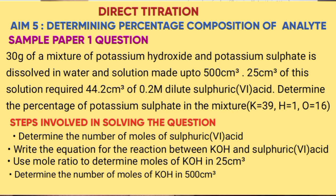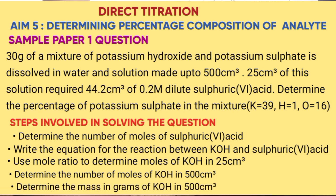Step 5 — determine the mass in grams of potassium hydroxide in 500 cm³, using mass equals number of moles times molar mass. Step 6 — determine the mass of potassium sulphate by taking the total mass of 30 minus the mass of potassium hydroxide. The last step is to determine the percentage of potassium sulphate by taking the mass of potassium sulphate divided by the total mass of 30, times 100 percent.